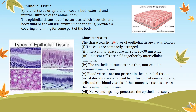What are the characteristic features of epithelial tissue? The cells are compactly arranged. Their main function is providing protection — protecting the inner organs from the external environment. So the cells are compactly arranged. Intercellular spaces are narrow, about 20 to 30 nanometers wide.